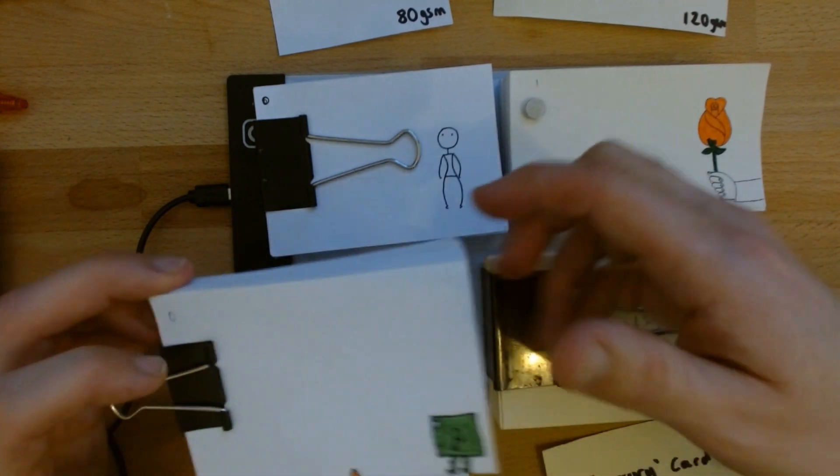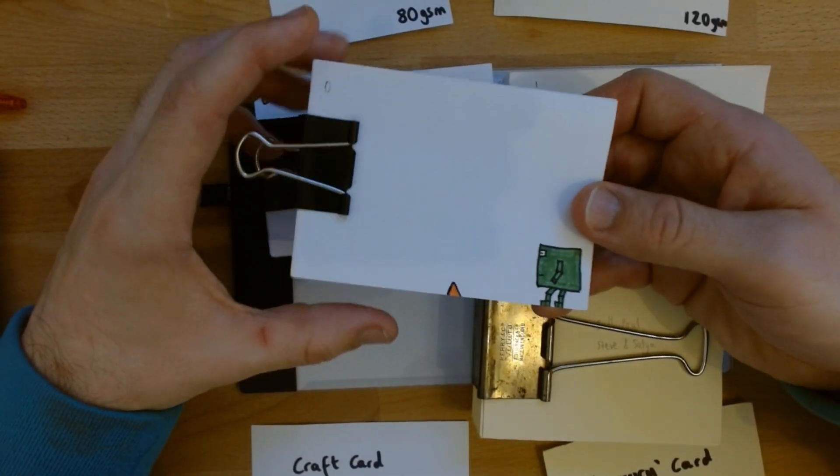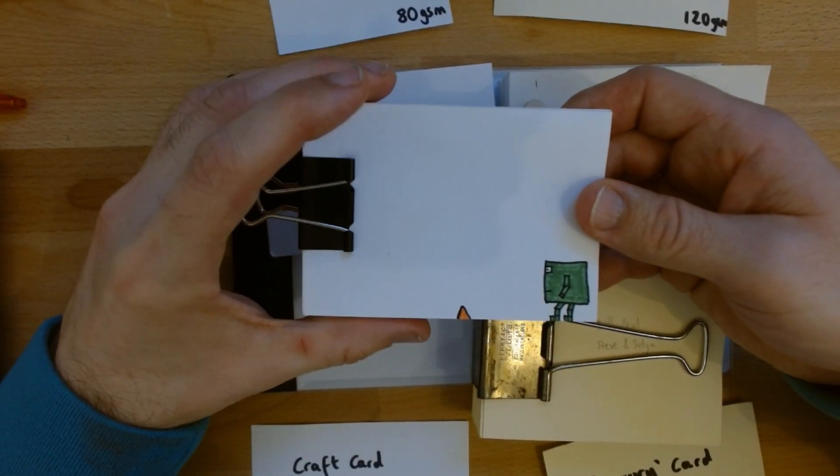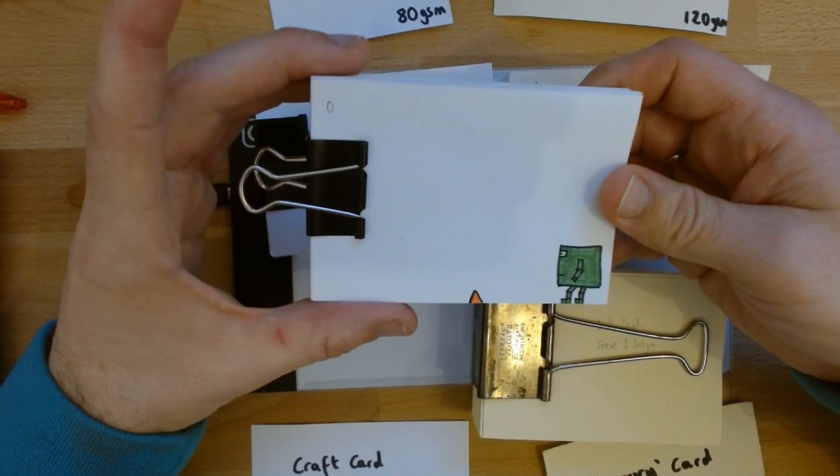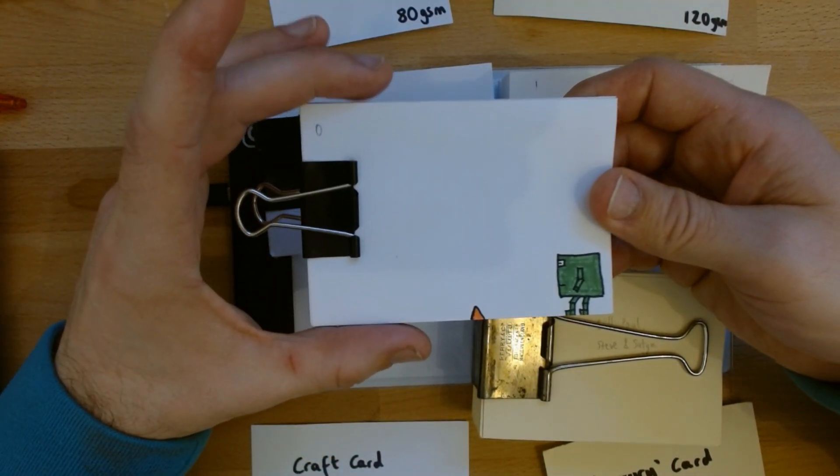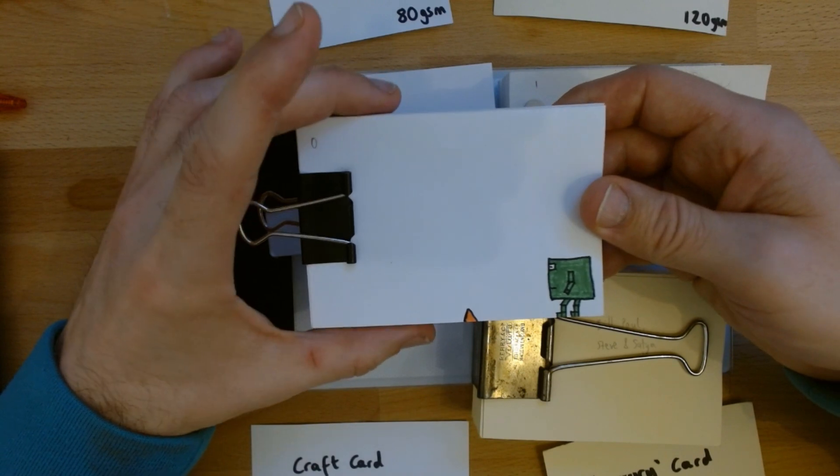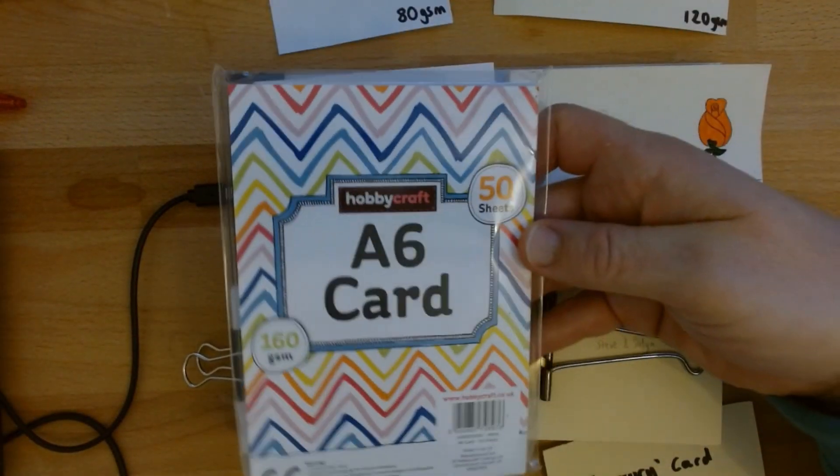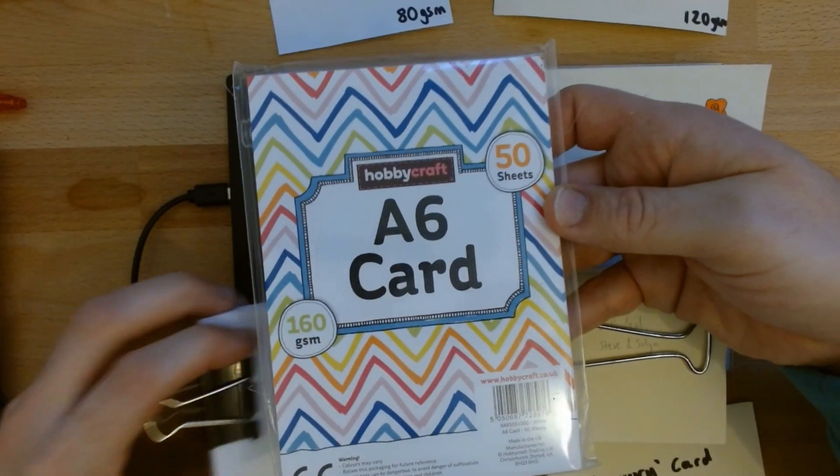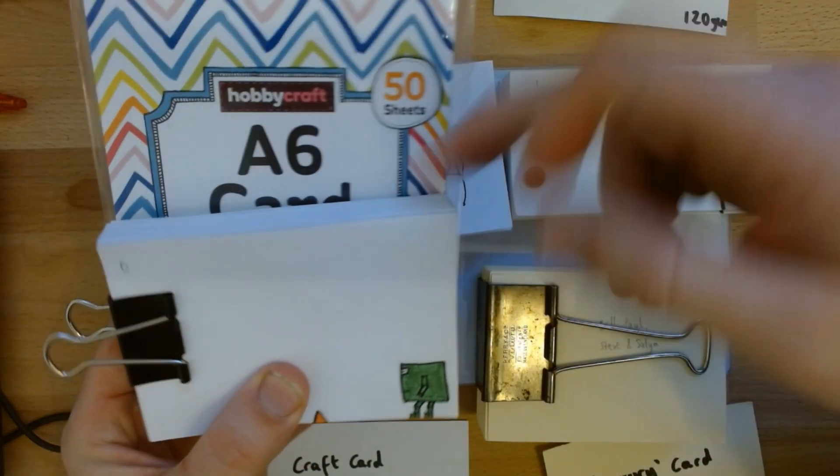This craft card that I buy, this is a good little trick actually, if you do want to keep the cost down. Remember this is almost half the price of the flipbook paper. This actually comes in an A6 pack, like this. It requires one cut down the middle.